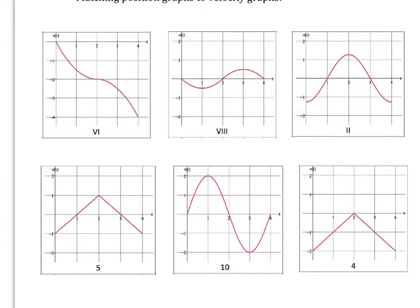I'm going to show six graphs: the first row is position graphs and the second row is velocity graphs, and we're going to try to match them. You need to remember what the derivative is — if velocity is the derivative of position, then the slope of our position graph, because derivative is slope, is our velocity graph. So I start by generalizing: in the first graph, it is going down the entire time.